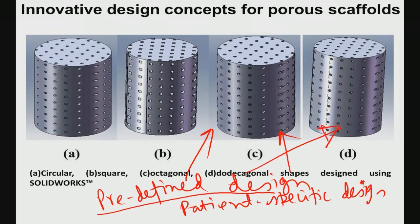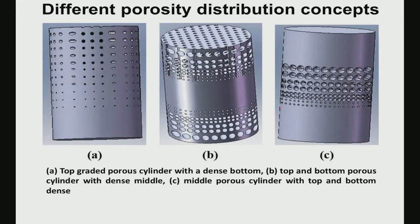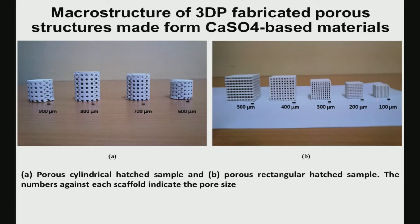Pore size can be graduated along a direction, or you can have one solid end and one porous end, or a porous central region. One can then study one-to-one correlation between input design and output scaffold: for example, an input pore size of 100 microns may yield an output of 90 or 120 microns, and a defined pore-to-pore distance of 50 microns in the input may become 40 microns in the output because the pore size changed.